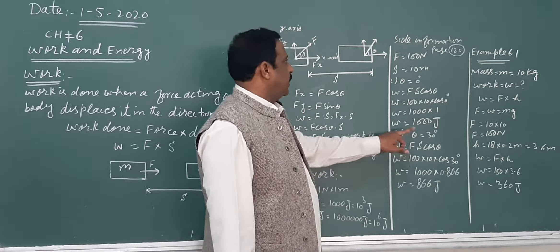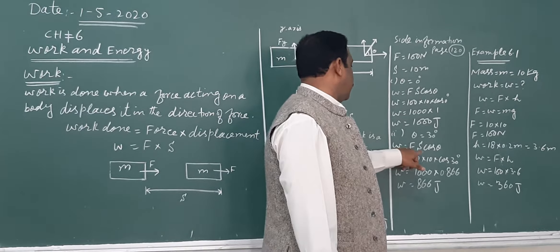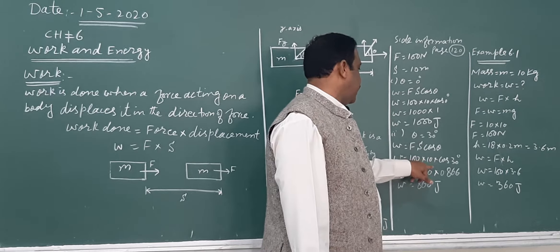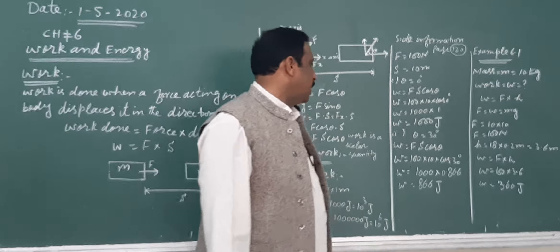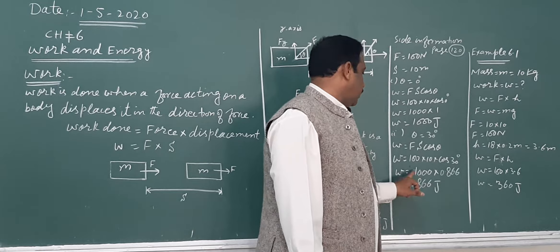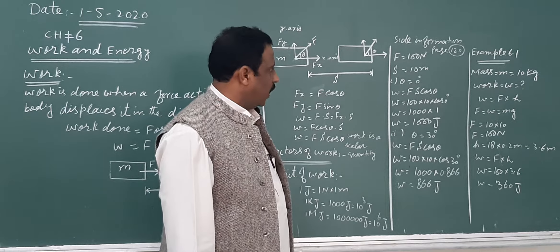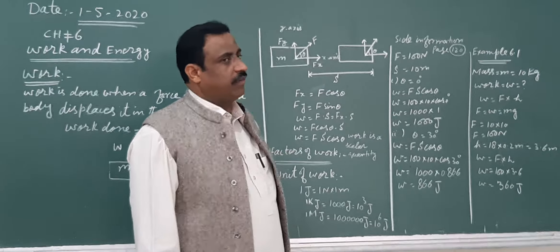In the other case, the angle is 30 degrees between force and displacement. Work done = 100 × 10 × cos(30) = 1000 × 0.866 = 866 joules.